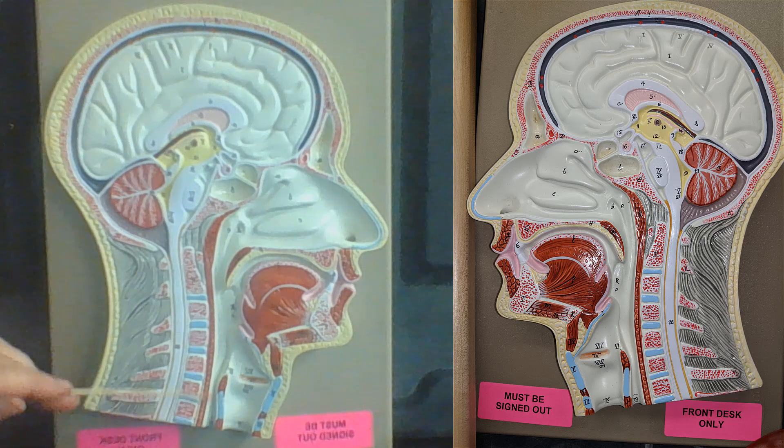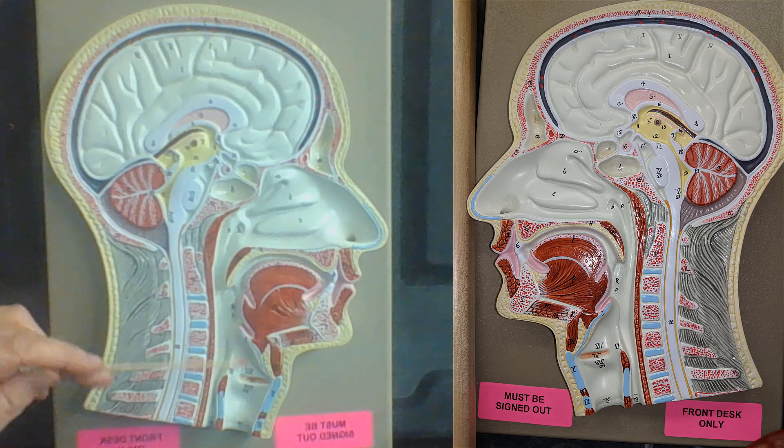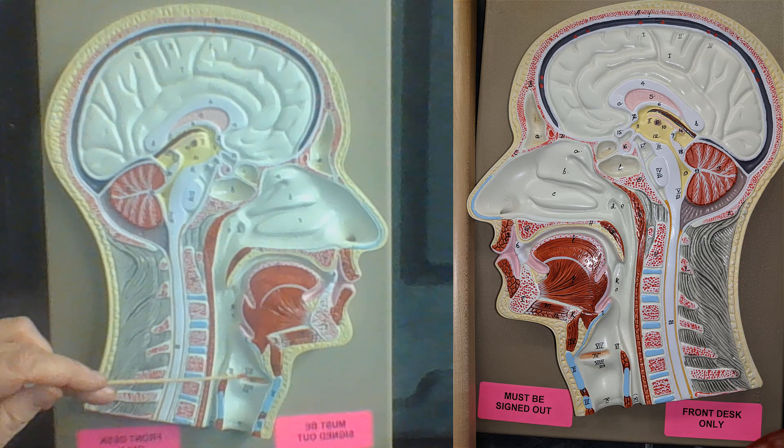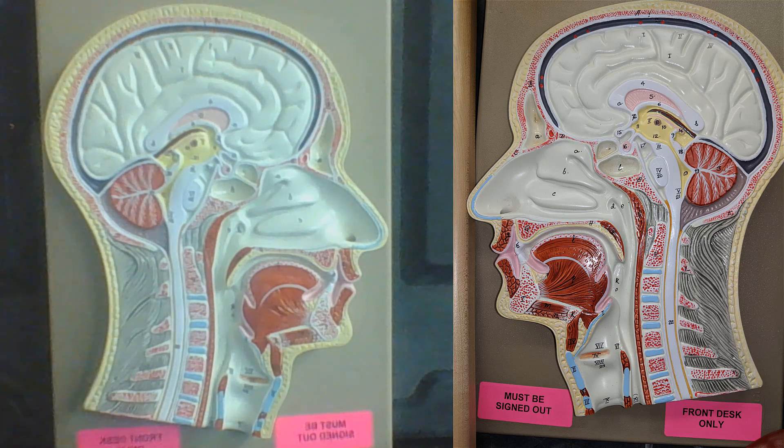This is the esophagus. This structure here is the epiglottis. This is the larynx. Your vocal cords are right here. As you continue down this path, after the larynx you will get to the trachea, which will then lead you to the lungs.